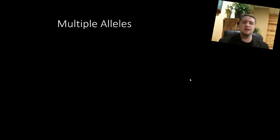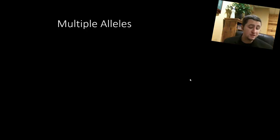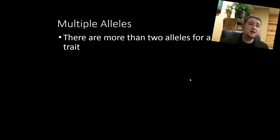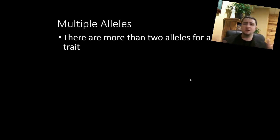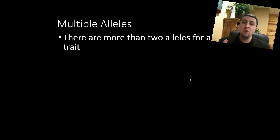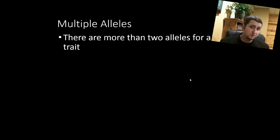Another thing we find in biology is multiple alleles, where instead of having just one allele — for example tall or short, or brown eyes or blue eyes — we have many, many alleles that show up in the human population. Most traits actually work this way, where many, many alleles account for the same type of trait.